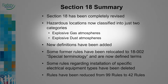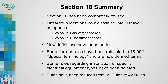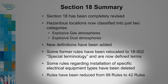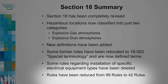Hazardous locations are now classified into just two categories: Explosive Gas Atmospheres and Explosive Dust Atmospheres. New definitions have been added; some former rules have been relocated and are now defined terms. Some rules regarding the installation of specific electrical equipment types have been deleted. The rules in Section 18 have been reduced from 99 to 42 rules.